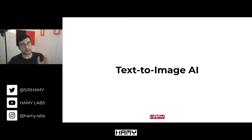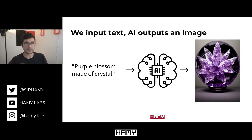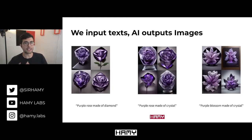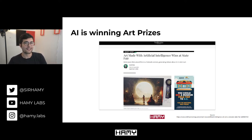So let's start with a brief high-level idea of what text-to-image AI is. Basically, we input some text and we get an output image. Here's an example where I just say 'purple blossom made of crystal' and we get a nice high-quality image of that. Ideally it's just as simple as this, but in reality we're going to have to iterate with the AI and craft our prompts accordingly to get the specific image we want. A lot of the images these AIs produce are really, really good — and a lot of them are even winning prizes, like that viral article from this past week.